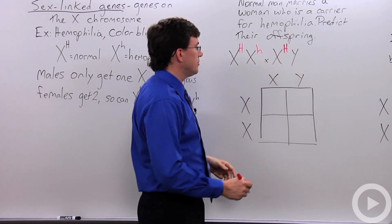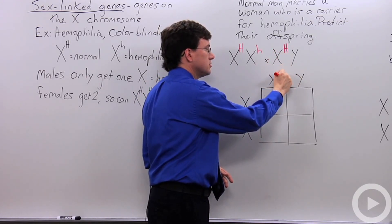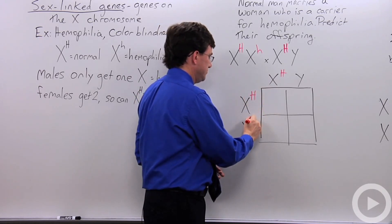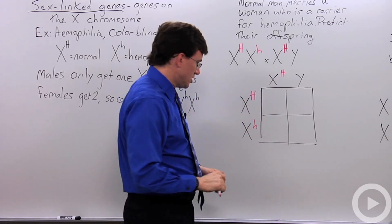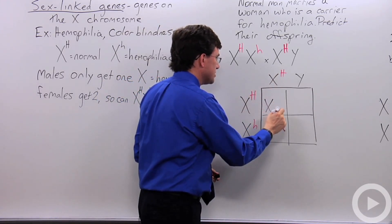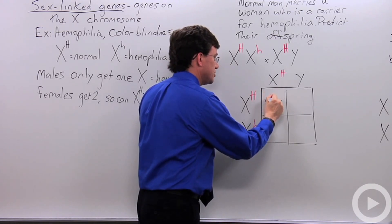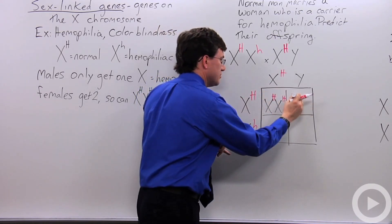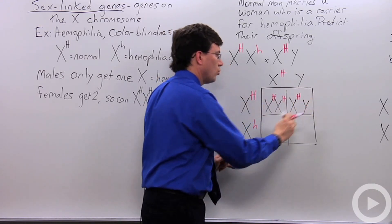Now that I've got their genotypes figured out, I'll plug them into this Punnett square. The man's genes go up top and the woman's go along the side. The first daughter gets X^H from both mom and dad, and the son gets X^H from mom and Y from dad.